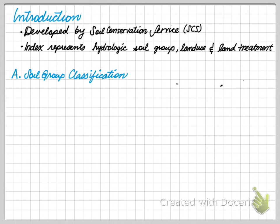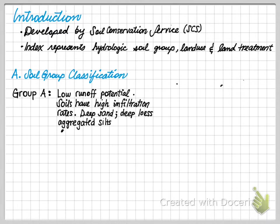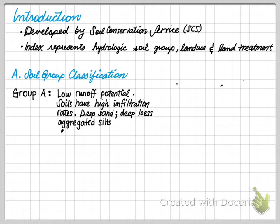First, let's talk about soil group classifications. Group A has a very low runoff potential. Soils have high infiltration rates. They're considered deep sands, deep loesses, and aggregated silts. Loesses are windblown silts.